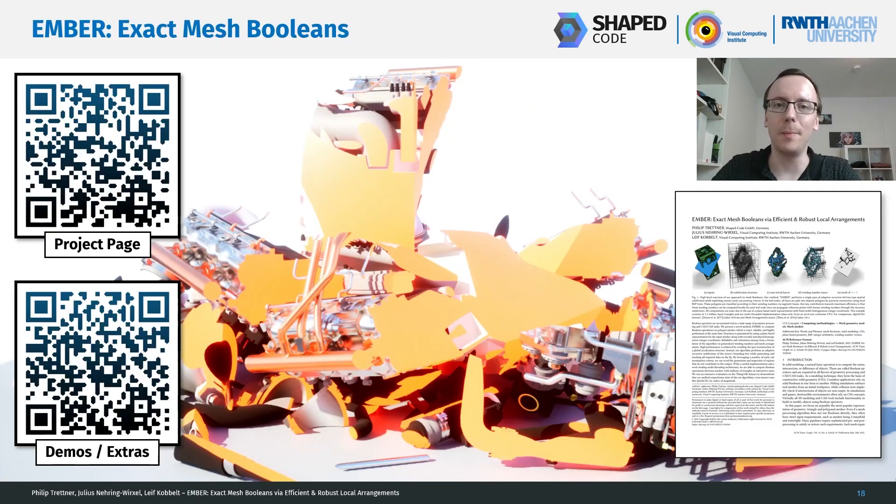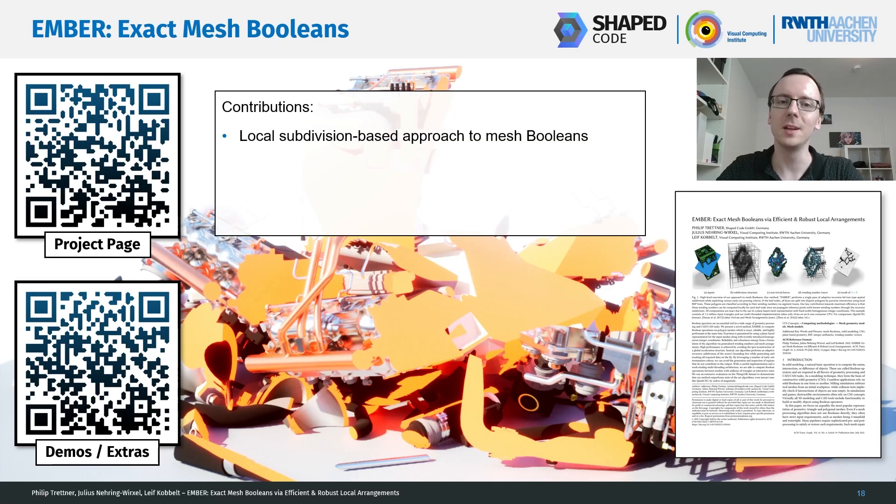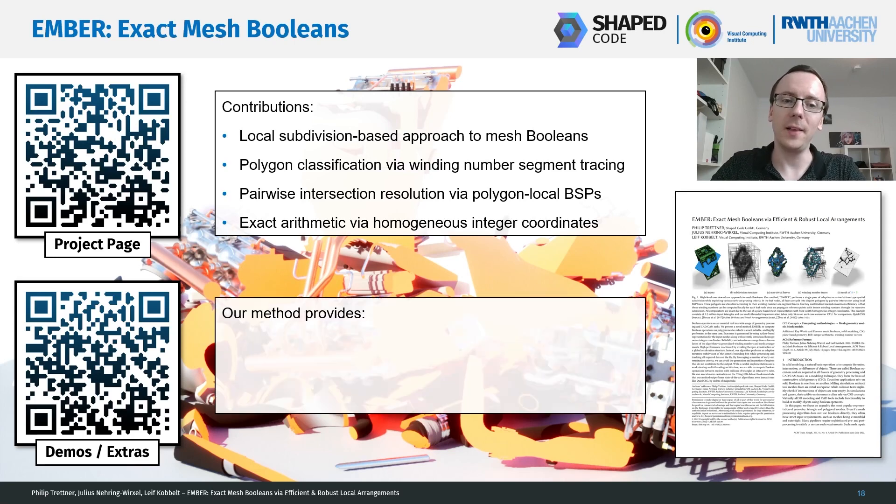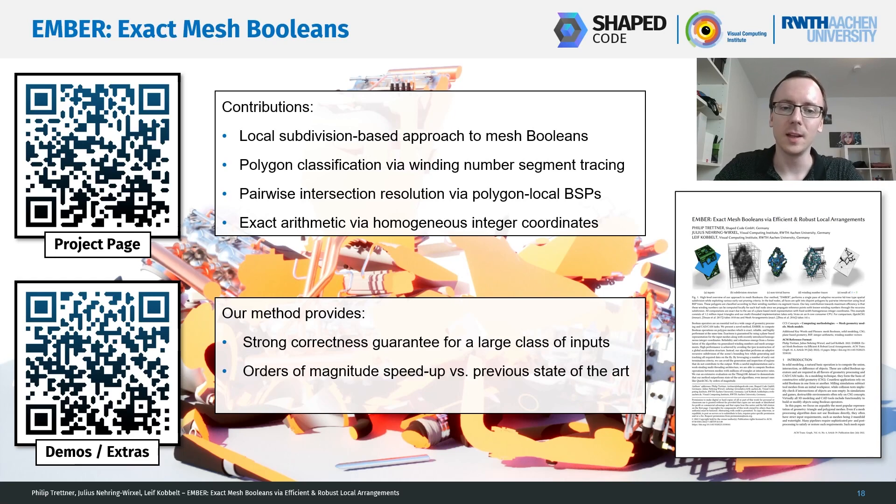So, to summarize, we present AMBER, a method for exact mesh booleans, and we contribute a local subdivision-based approach to mesh booleans, a polygon classification that traces segments and accumulates winding numbers, a resolution of pairwise intersections via locally constructed BSP trees, and exact arithmetics via homogeneous integer coordinates in a plane-based geometry approach. With our method, we have a strong correctness guarantee for a large class of input meshes, we have orders of magnitude speedup versus the previous state-of-the-art, and with this, we have the ability to process millions of triangles at interactive rates.